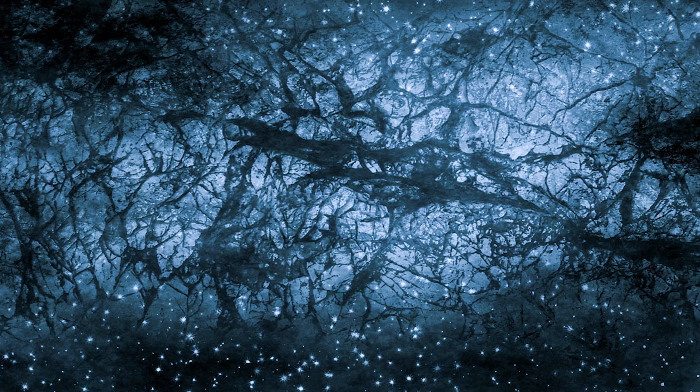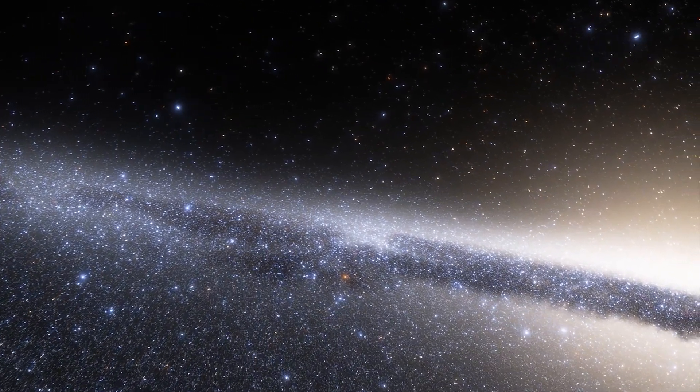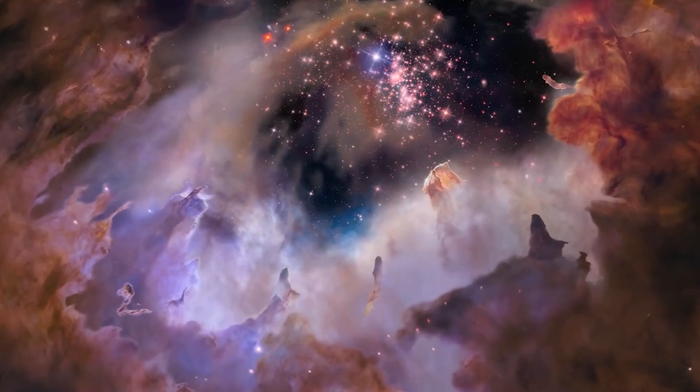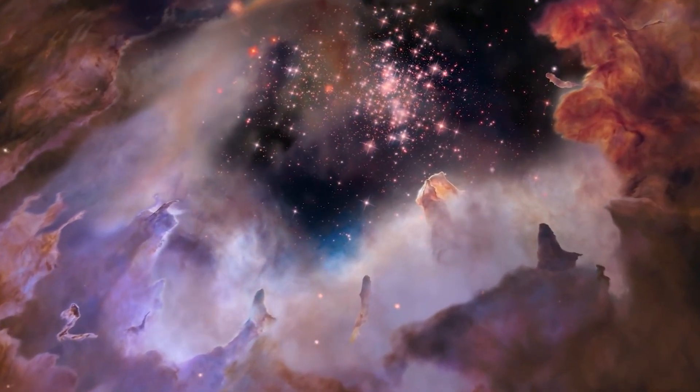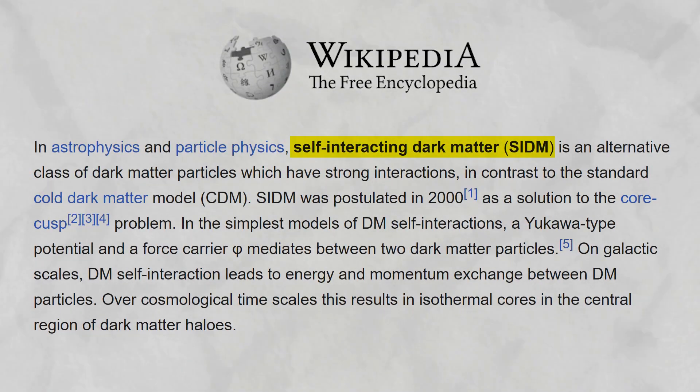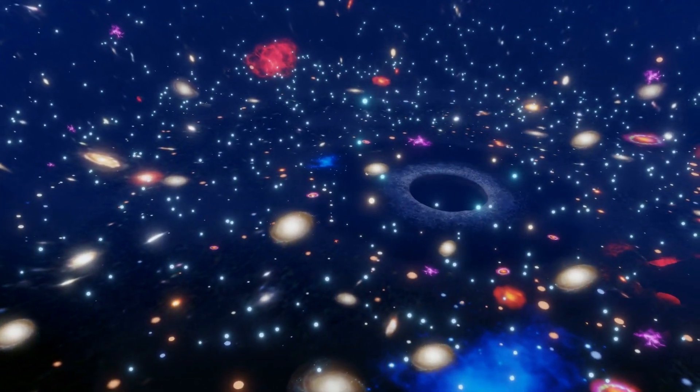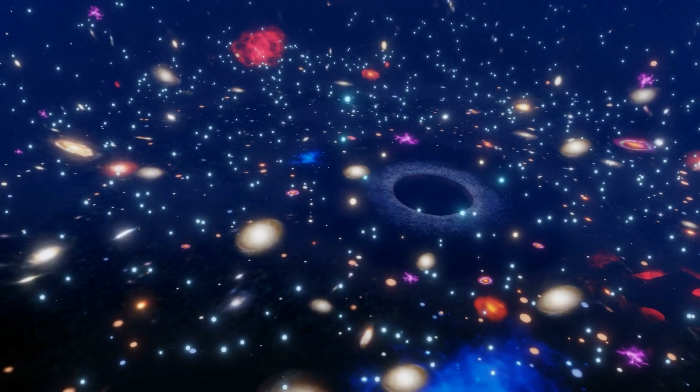Dark matter is a mysterious part of space, making up a significant part of the universe's weight, but we can't see it. Most ideas say dark matter doesn't really touch or mix much with anything, even itself. But the self-interacting dark matter idea tells a different story, saying it does mix in ways we didn't expect. This idea could help explain why galaxies move in ways that our space models don't get right.